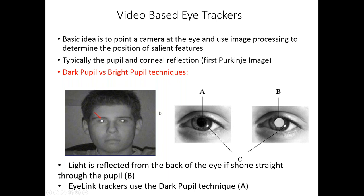There are two types of video-based eye tracking: the dark pupil technique, which is what the EyeLink uses, and the bright pupil technique used by some Tobii systems. You've seen a bright pupil when a camera flash causes red-eye — it's light reflected back through the pupil from the retina. In the dark pupil case, the image processing algorithms are looking for something circular and dark. The EyeLink systems use dark pupil tracking, looking to find a dark circle in the processed images.